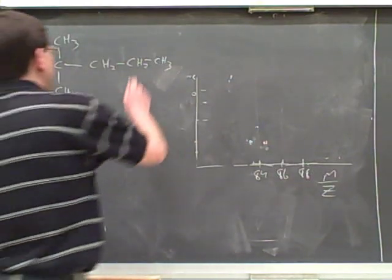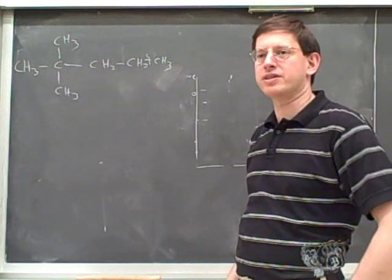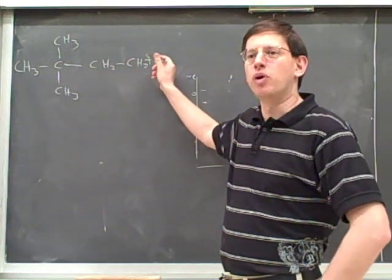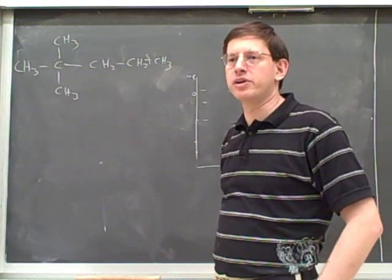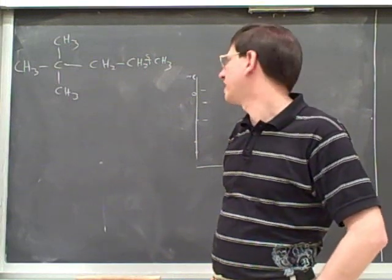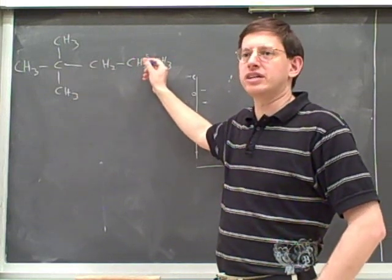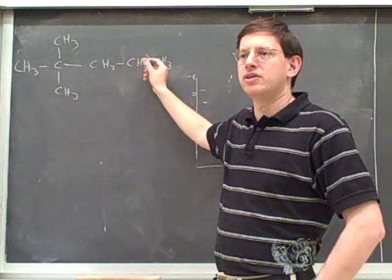Well then, is this a bond that's likely to fragment or not likely to fragment? Not, because this would give us a primary and a methyl. While neither the primary nor the methyl are going to be very stable as radicals or as cations, that doesn't mean this can't happen, but are these going to be high vertically or low vertically? Low.